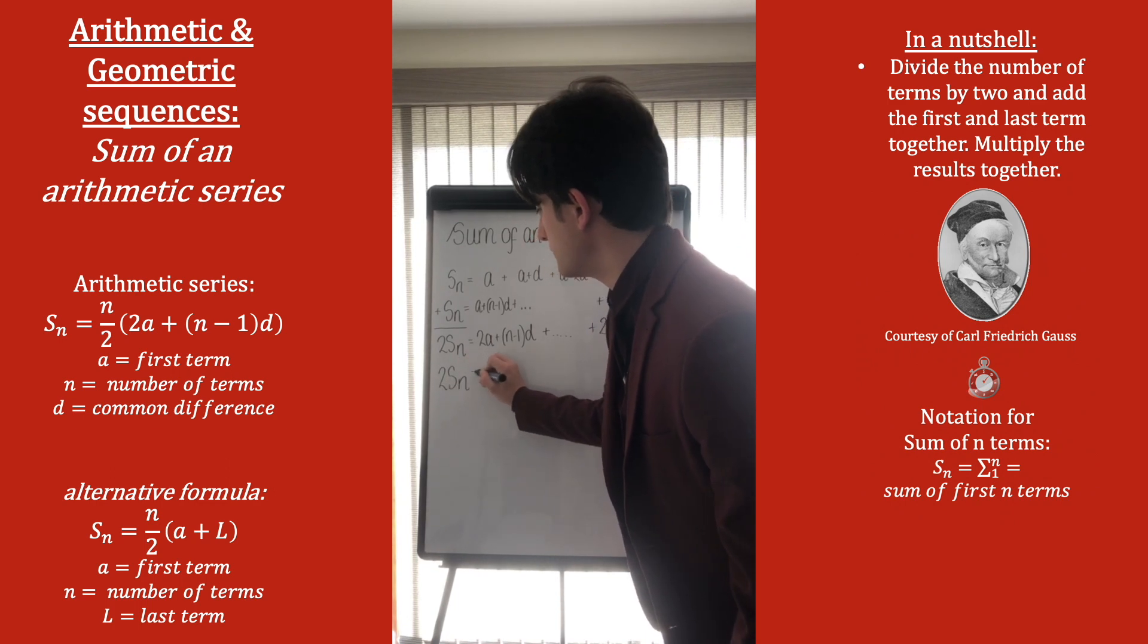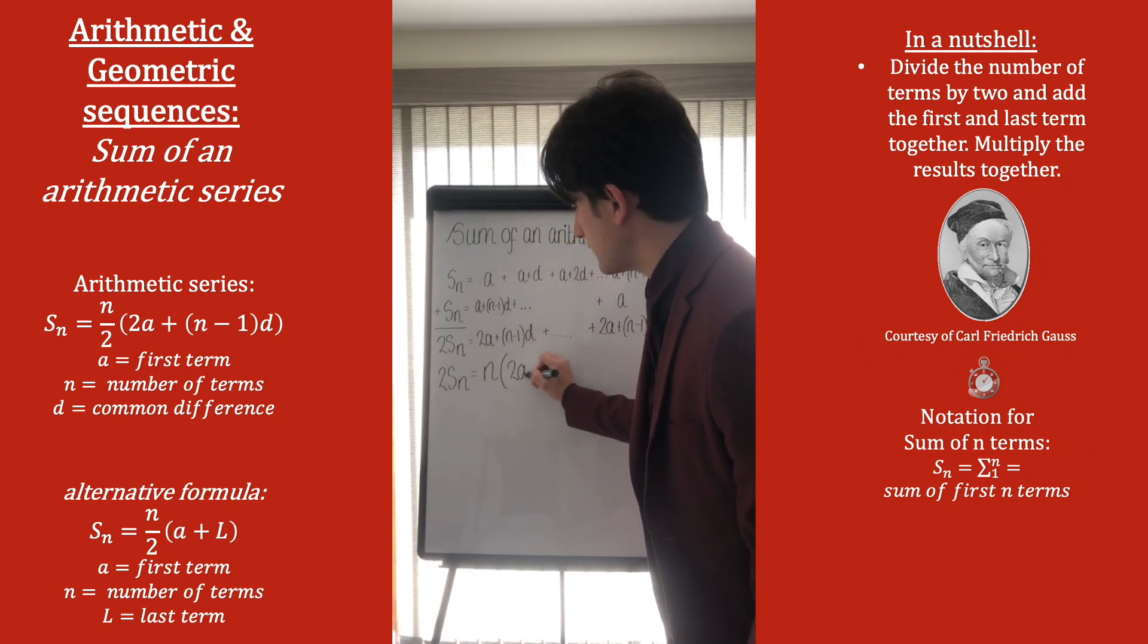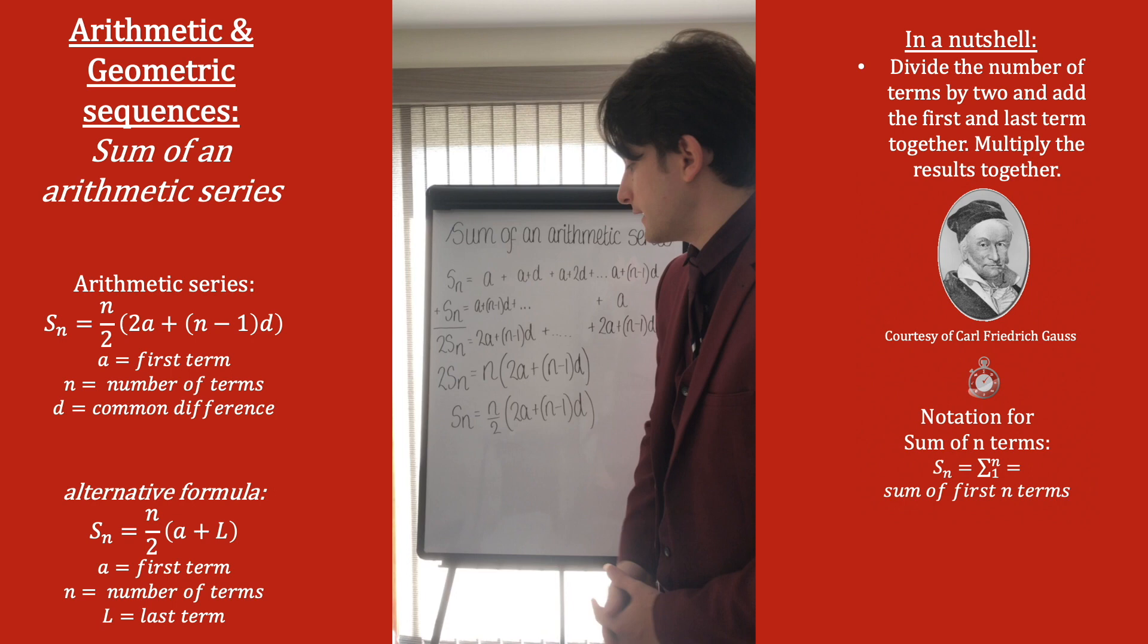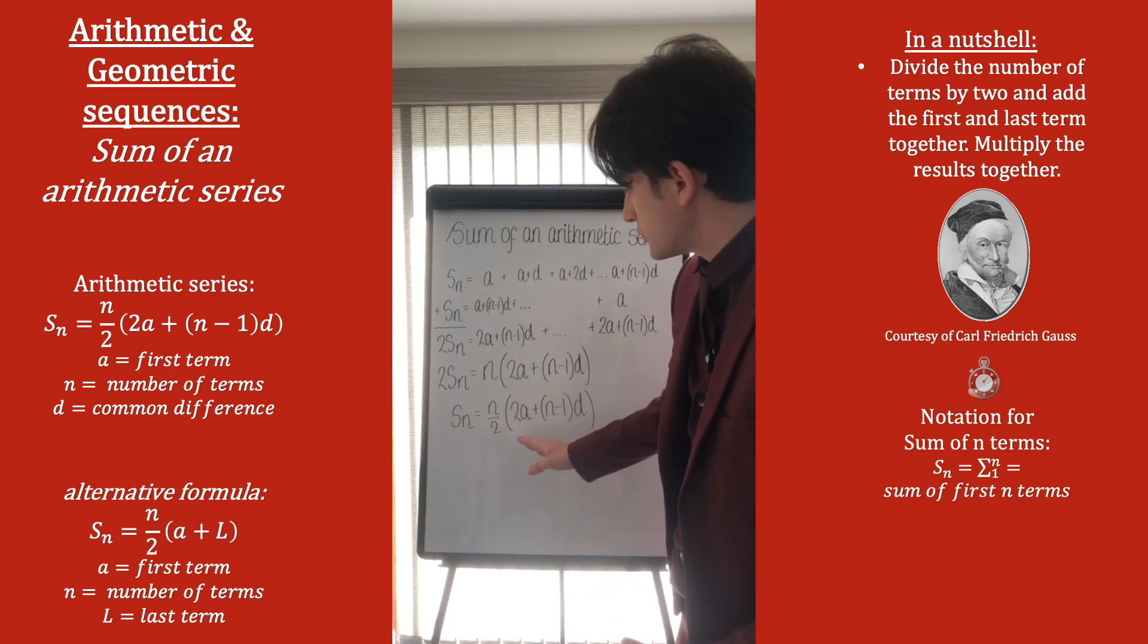So we end up with two times the sum of N terms is equal to N times 2A plus (N minus 1)D. Therefore, SN is equal to N over 2 times 2A plus (N minus 1)D.